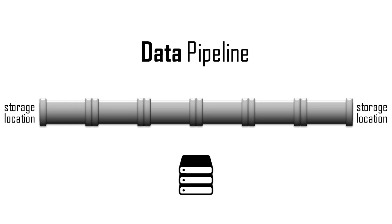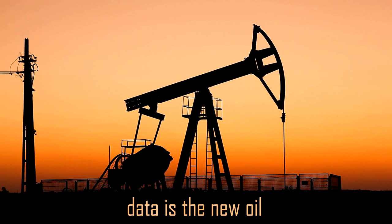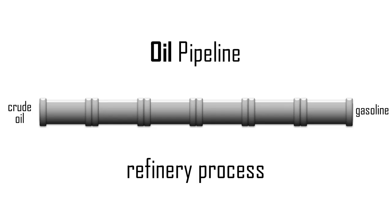A data pipeline transports digital data from one storage location to another storage location. You'll most often hear data compared to oil, as in 'data is the new oil.' This is especially useful when thinking about an oil pipeline as a refinery process that converts crude oil into a useful product like gasoline.